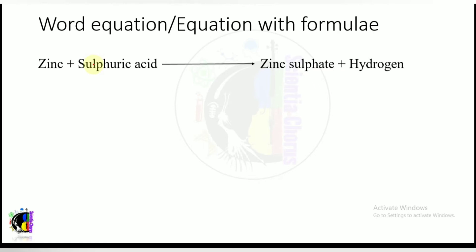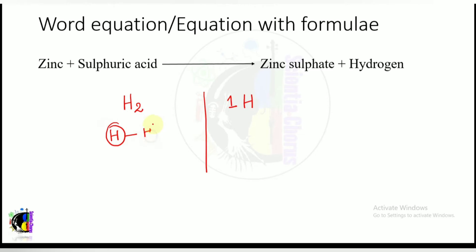A very important point to keep in mind: while balancing an equation, you cannot add molecules. You can only increase the number of atoms, but you cannot change the subscript number within a molecule. For example, H₂ is a molecule — one hydrogen atom bonded to another. If there is H, that is just one individual hydrogen atom.